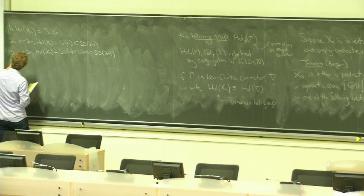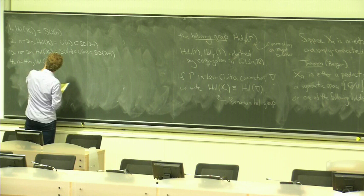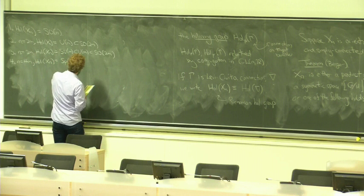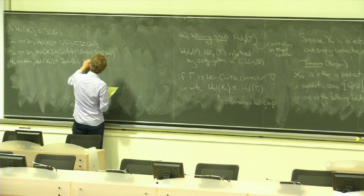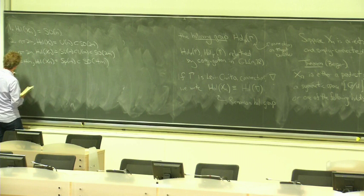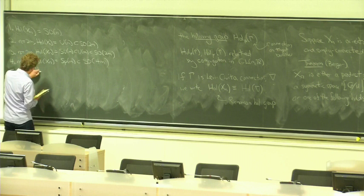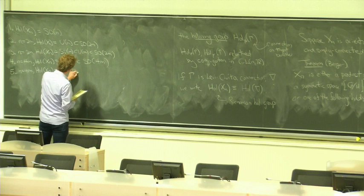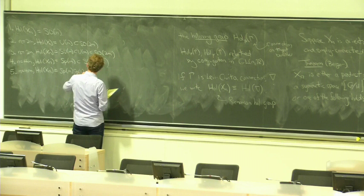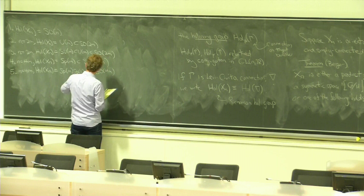Case four, n is a multiple of four. And the holonomy of X_N is Sp(M), which sits inside SO(4M). Case five, again, a multiple of four. n is equal to 4M, and the holonomy of X_N is Sp(M) times Sp(1). In my convictions, Sp(1) is the thing that's the same as SU(2). It's contained in SO(4M), but is not contained in U(2M).